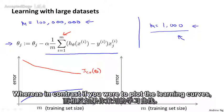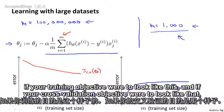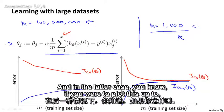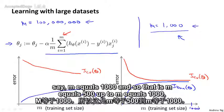Whereas in contrast, if you were to plot the learning curves, if your training objective were to look like this and if your cross validation objective were to look like that, then this looks like the classical high bias learning algorithm. And in the latter case,